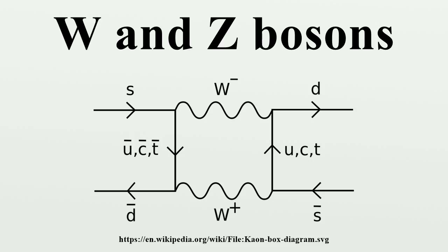Their high masses thus limit the range of the weak nuclear force. By way of contrast, the electromagnetic force has an infinite range, because its force carrier, the photon, has zero mass. And the same is supposed of the hypothetical graviton. All three bosons have particle spin S equals 1.